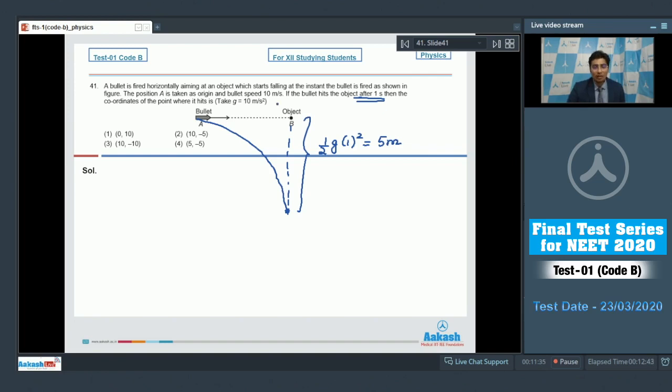Now students, to find out this particular distance we must acknowledge that the horizontal acceleration of the bullet would be zero. And the horizontal distance traveled by the bullet will be simply its speed multiplied by the time, that is one second. Here the speed is given as 10. So if this is X then X will be equal to 10 into one, that is 10 meters. And hence the coordinates of this point will be 10 comma minus 5, meaning that for this question the correct answer is option number 2.